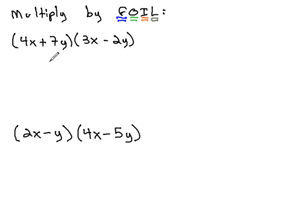The idea is, if we were multiplying a polynomial like 4x plus 7y times 3x minus 2y, we would start by multiplying the first terms together. The first term of each binomial is 4x times 3x, which would be 12x squared.